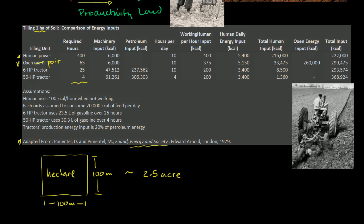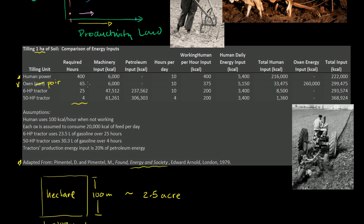So clearly human takes a lot longer. Oxen, they can do a little bit faster. Six horsepower tractor, even faster. A 50 horsepower tractor, very powerful tractor, even faster than that.